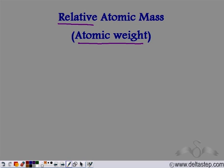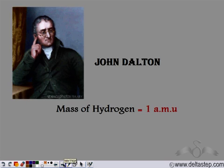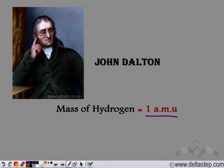John Dalton was the first scientist to propose that the masses of other elements can be compared to the lightest element, which is hydrogen. Its mass is taken to be one atomic mass unit. So the masses of all the other elements can be found out by comparing them to the mass of the lightest element, which is hydrogen.